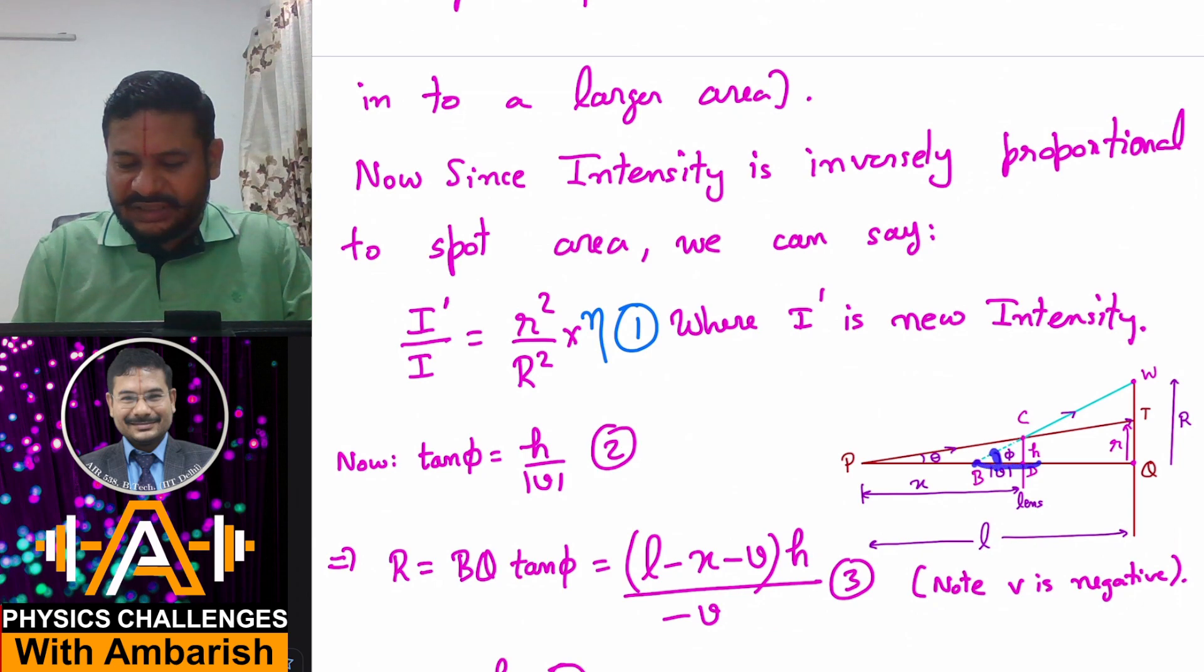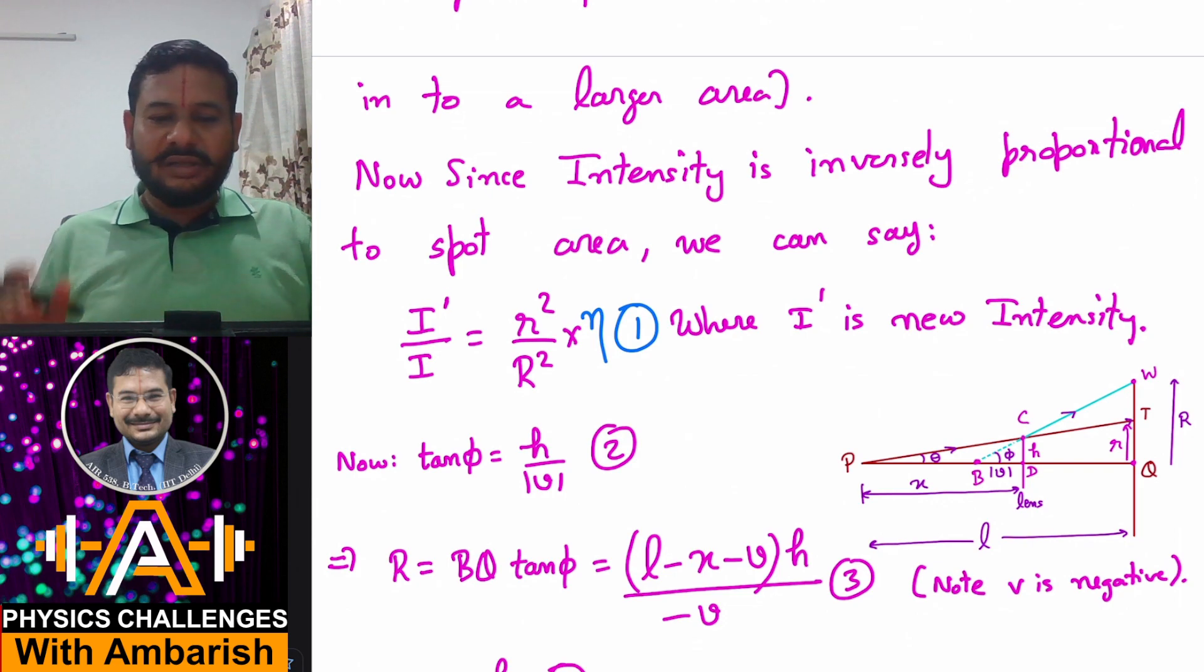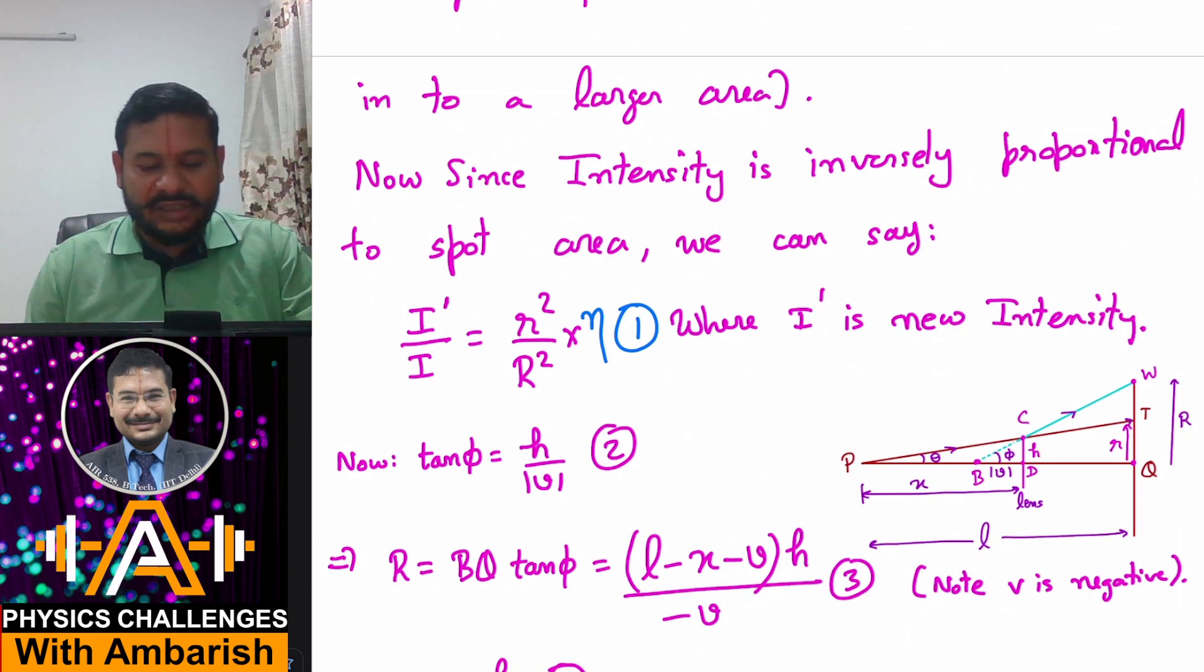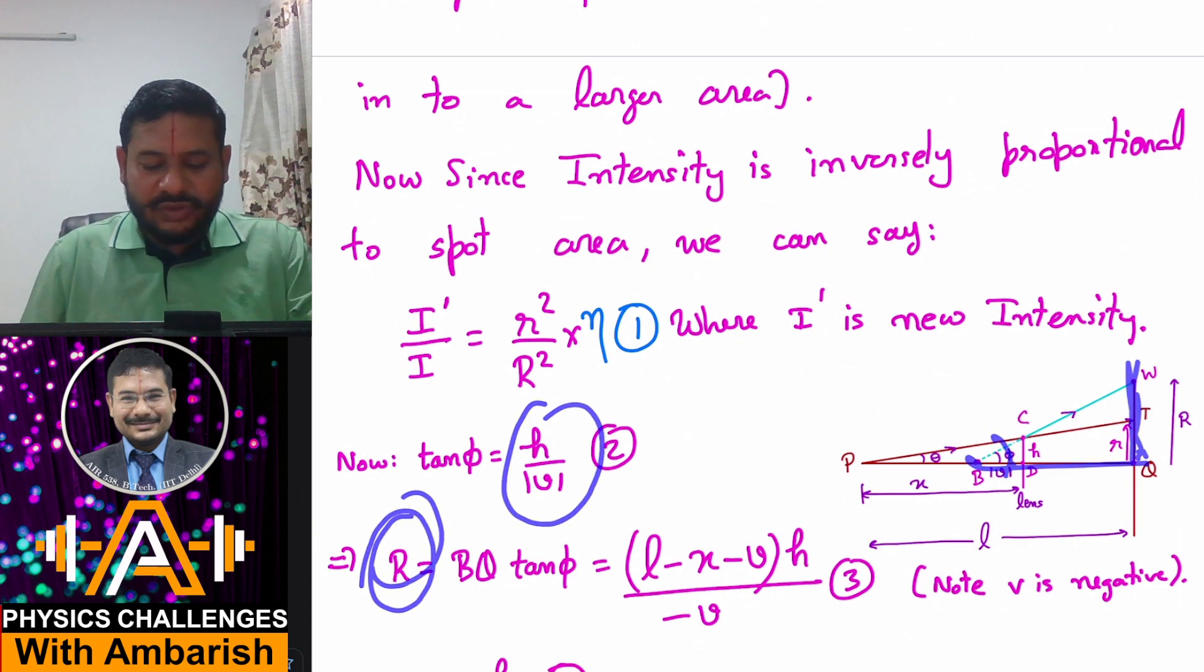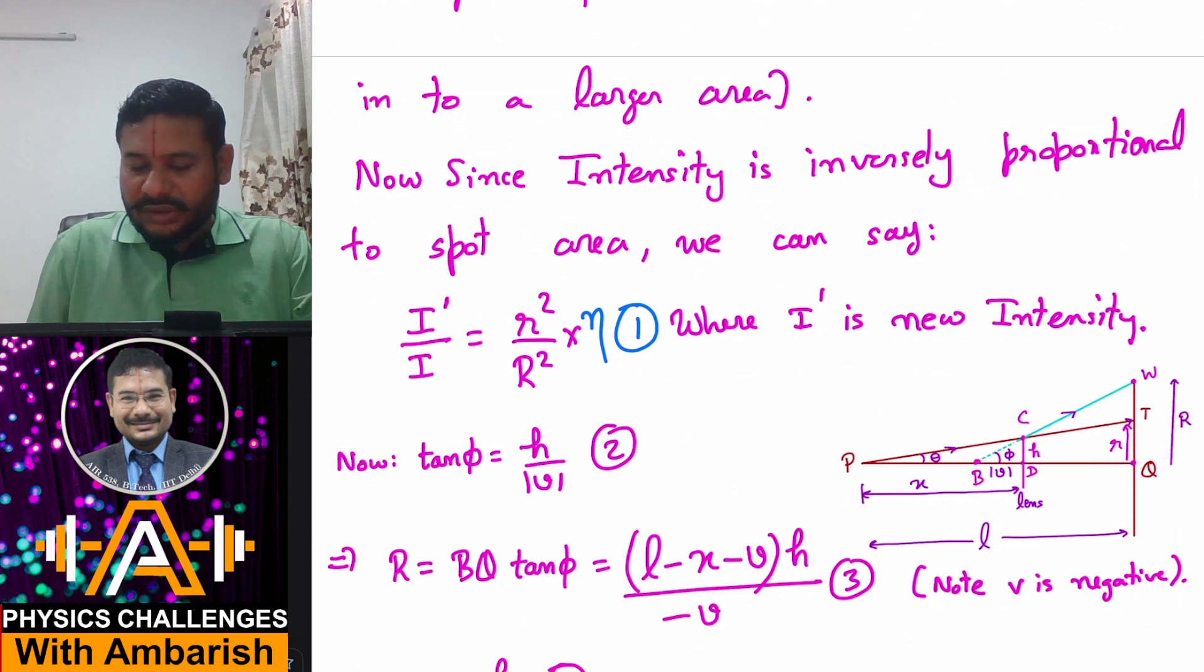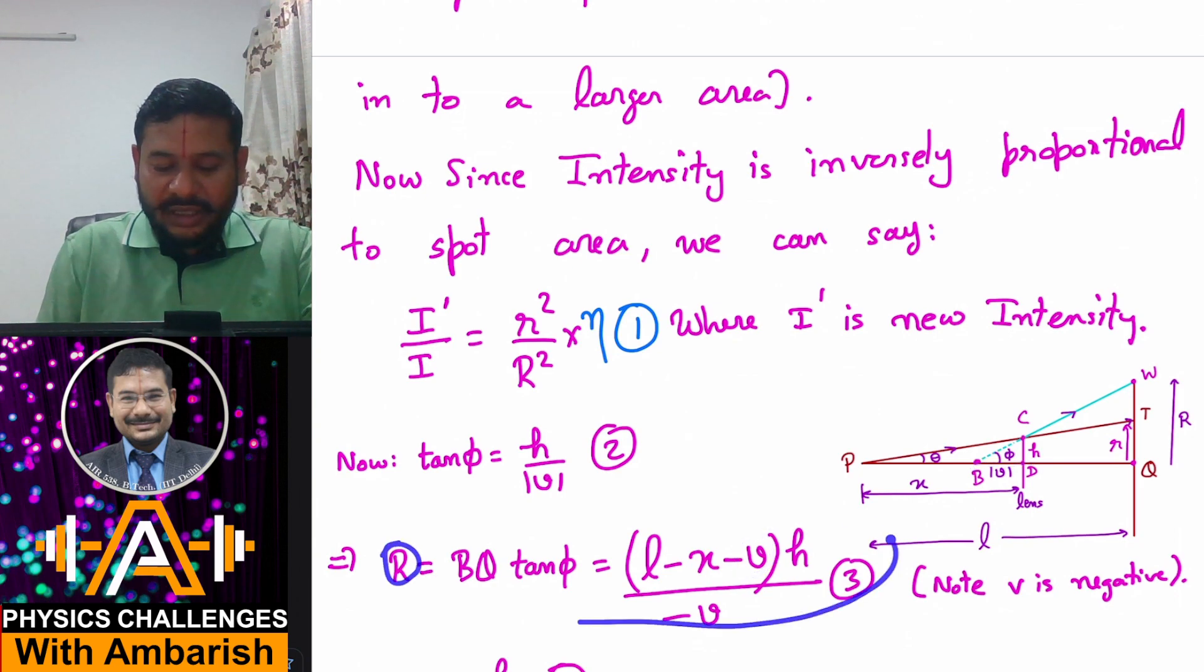Now what about tan phi? Phi is this angle. Tan phi is h upon V mod, where V I have used for the image of the source. P is the source and its image is formed somewhere at point D, and this distance DB I am calling V mod. This coordinate of B with respect to D is actually V. I'll be using Cartesian convention where we make measurements against the incident direction and choose the coordinate as negative. What about capital R? Capital R is BQ times tan phi, which is h upon minus V. And BQ distance is what? DQ is L minus X, and then you add this distance which is minus V. So capital R equals L minus X minus V times h over minus V. This is equation 3.